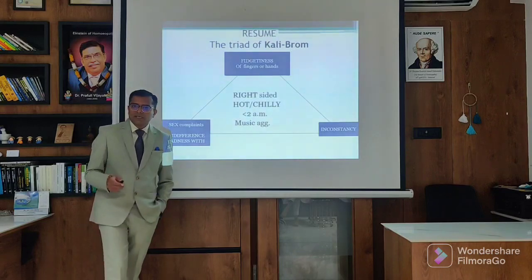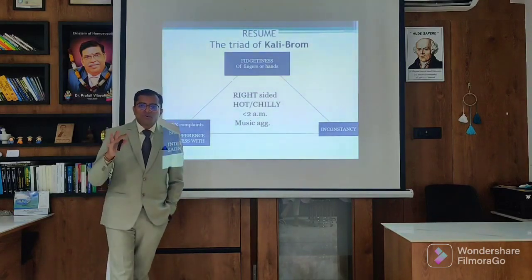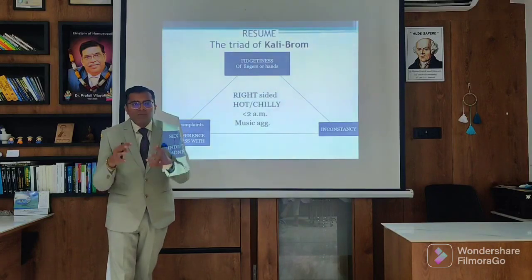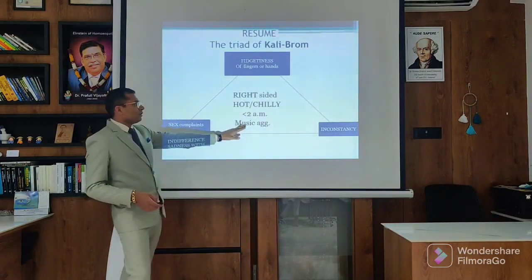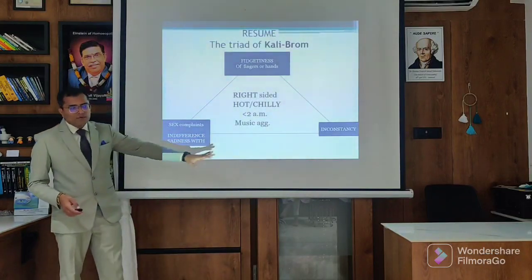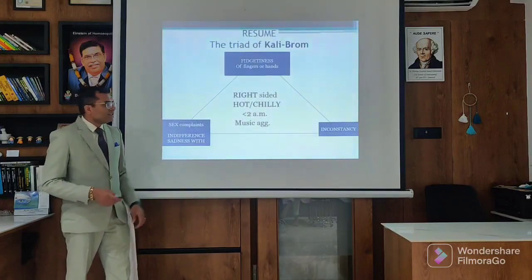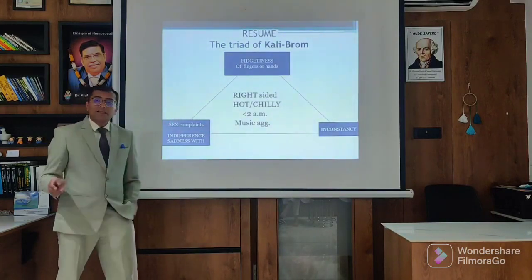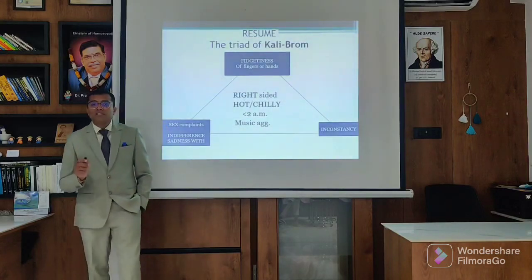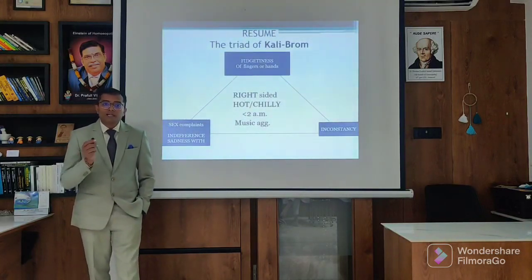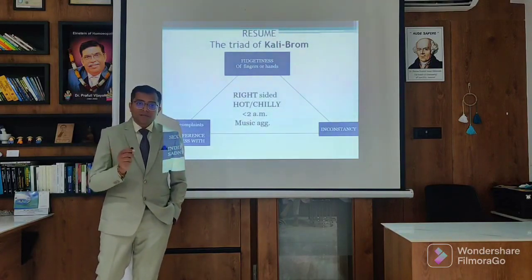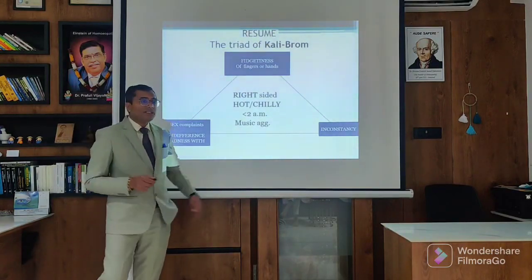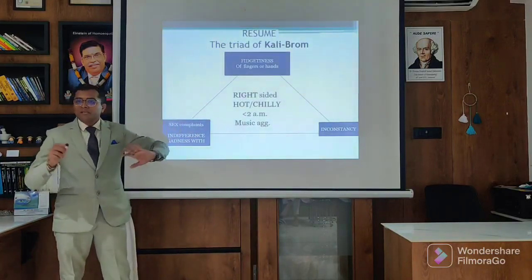Kali Brom - I said to you that Kali Brom is the anti-psychiatric remedy in our Materia Medica. Most of the time Kali Brom has the most fidgety of the hands. When you find the first sign is the whole body speaks, so Kali Brom's body is fidgety. It is right-sided, can be hot or chilly, mostly aggravation at 2 AM - all Kali are aggravation 2 to 4 AM. Music aggravation, there is inconstancy, and there is sex complaints, indifference and sadness. Again, the component of Kali Brom is the feeling of being in danger from the family, the feeling of conspiracy from the family, feeling that the family is plotting against him, feeling that the landlord is not giving his land and they are plotting against him. These are the conspiracy feelings they have because the bromine content has a feeling of being betrayed.